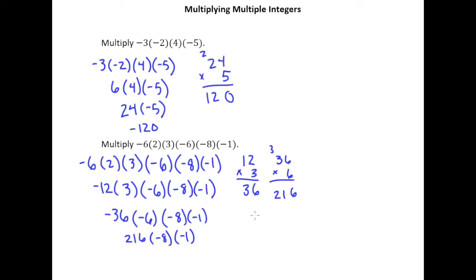And then I've got to multiply 216 and 8 together. And that's leaving me with 1728, but it's a negative 1728 because it's a positive times a negative.